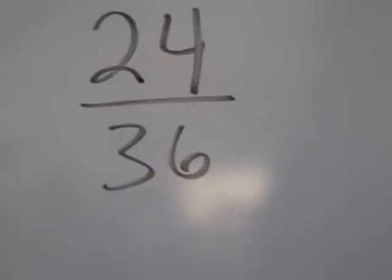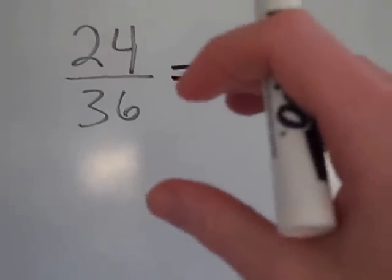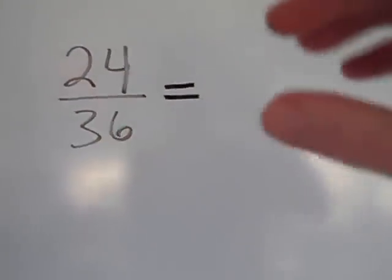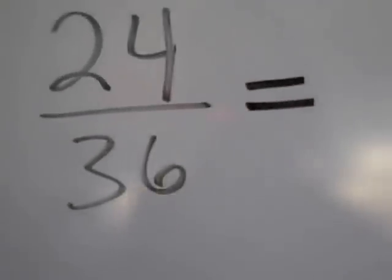So really what you're supposed to do is keep dividing until you can't divide anymore, or just divide by the greatest common factor of these two numbers. So this is the way that most people learn how to do it.